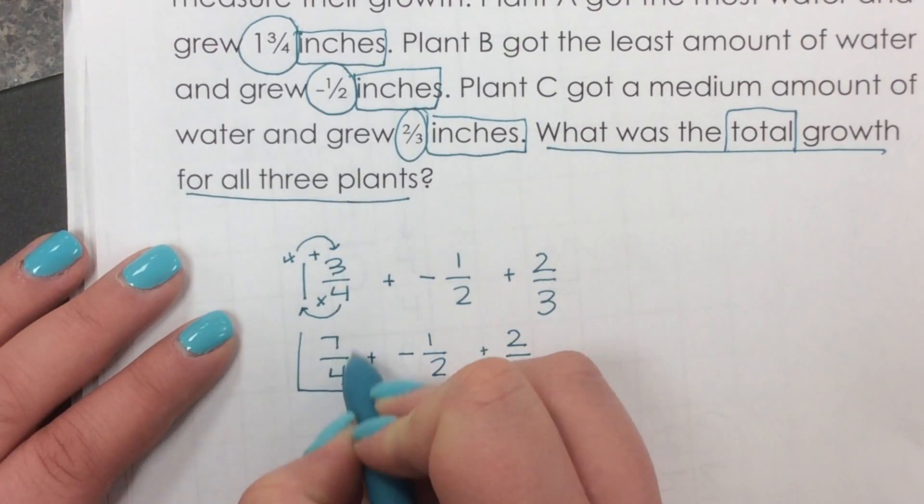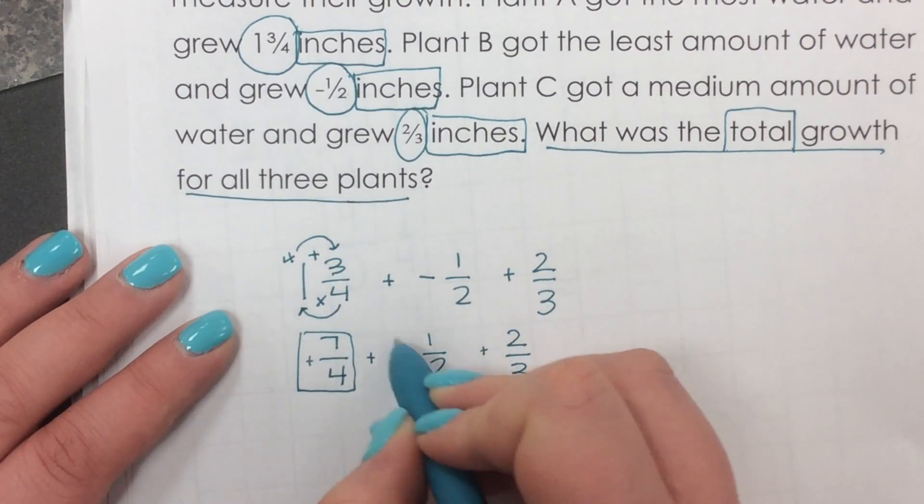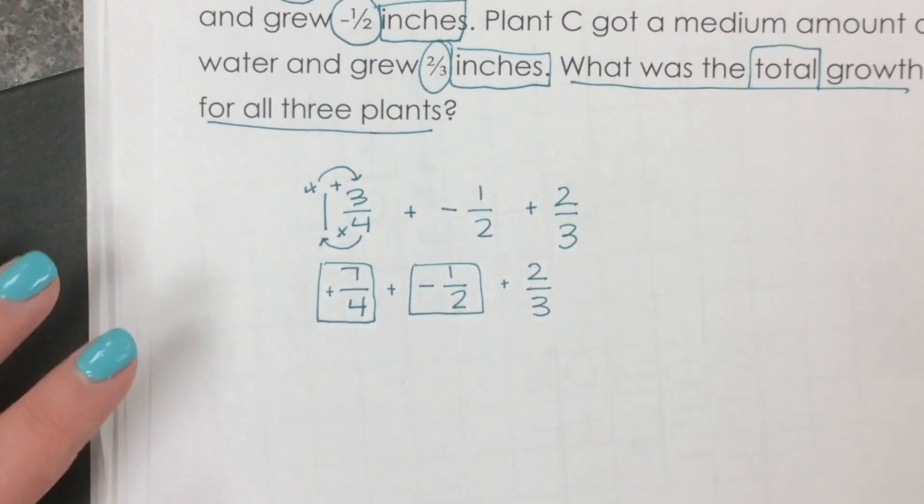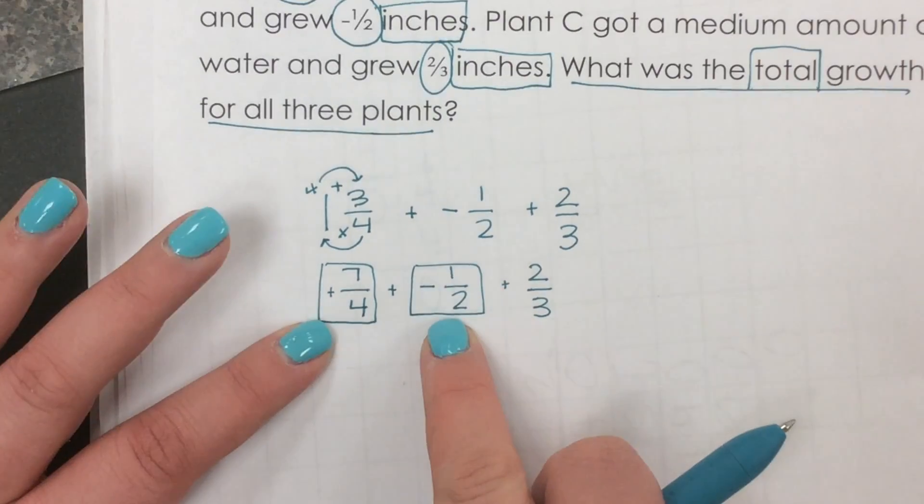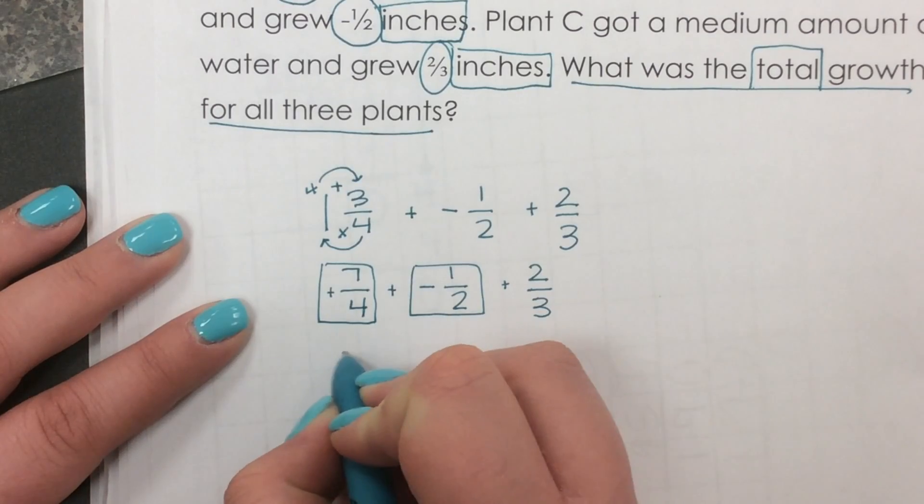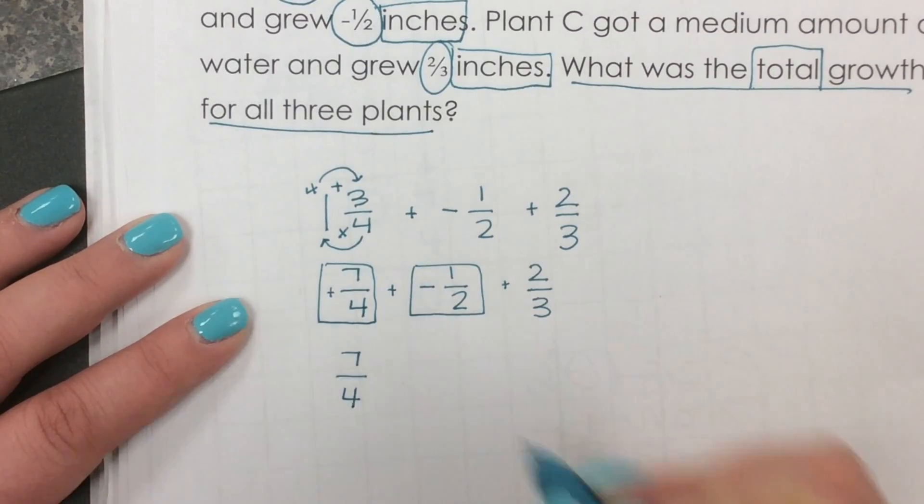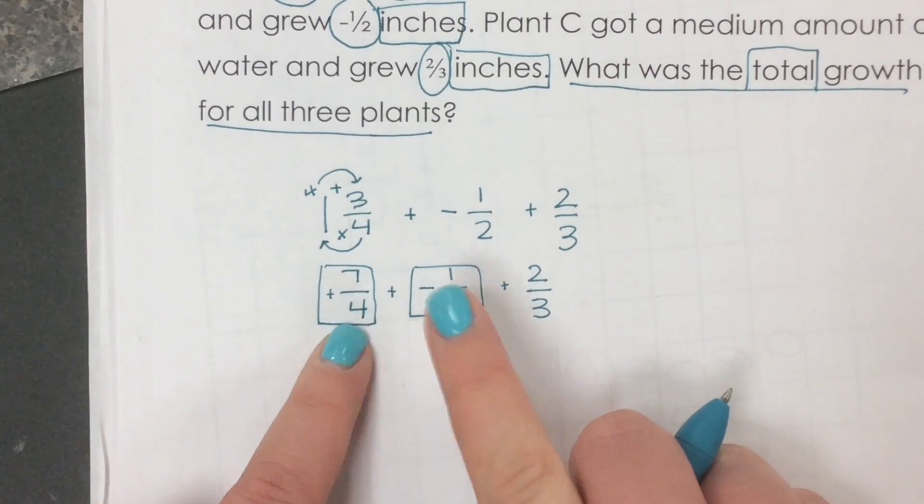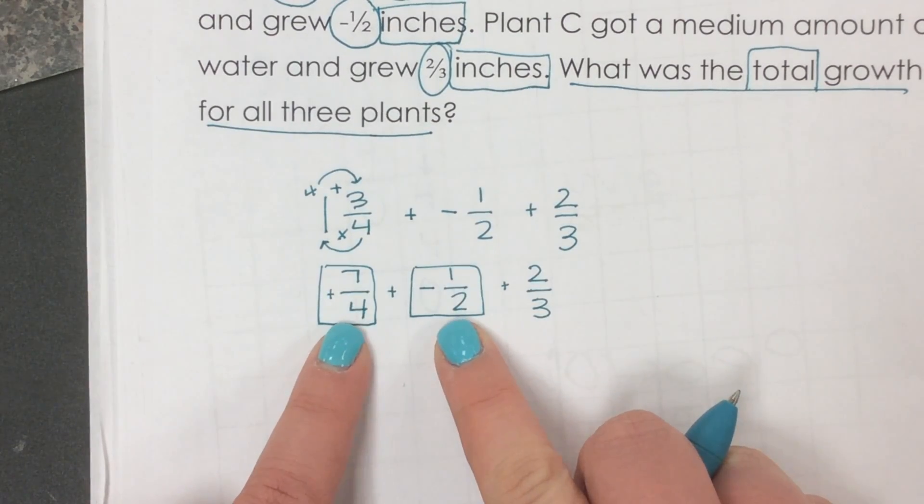I'm going to box these with the symbol directly in front. So that would be a positive. The symbol directly in front of one half is a negative. So I see these are different signs. So I'm going to subtract them. But before I do that, I need to make them have the same denominator. When I compare these denominators, seven fourths and negative one half, I see four and two.